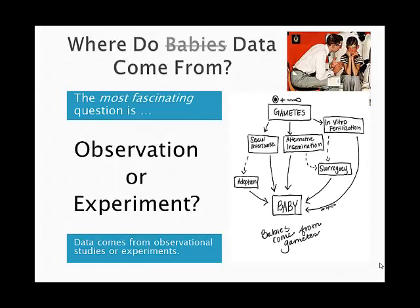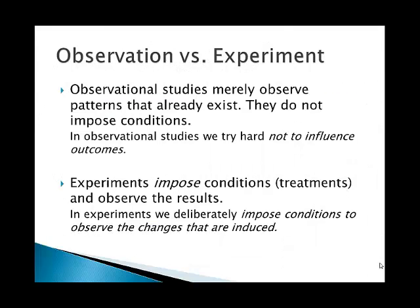Let's talk about where data comes from. When thinking about data, we have to distinguish between two different kinds of sources: whether our data come from observational studies or from experimental studies. Data from experimental studies are very different from observational studies in the kinds of conclusions we can make. Observational studies merely observe patterns that already exist — they do not impose any conditions, and we try hard not to influence the outcomes. In an experiment, however, we impose conditions called treatments in order to observe the results of imposing those conditions. In experiments, we are deliberately imposing conditions to observe the changes that are induced.